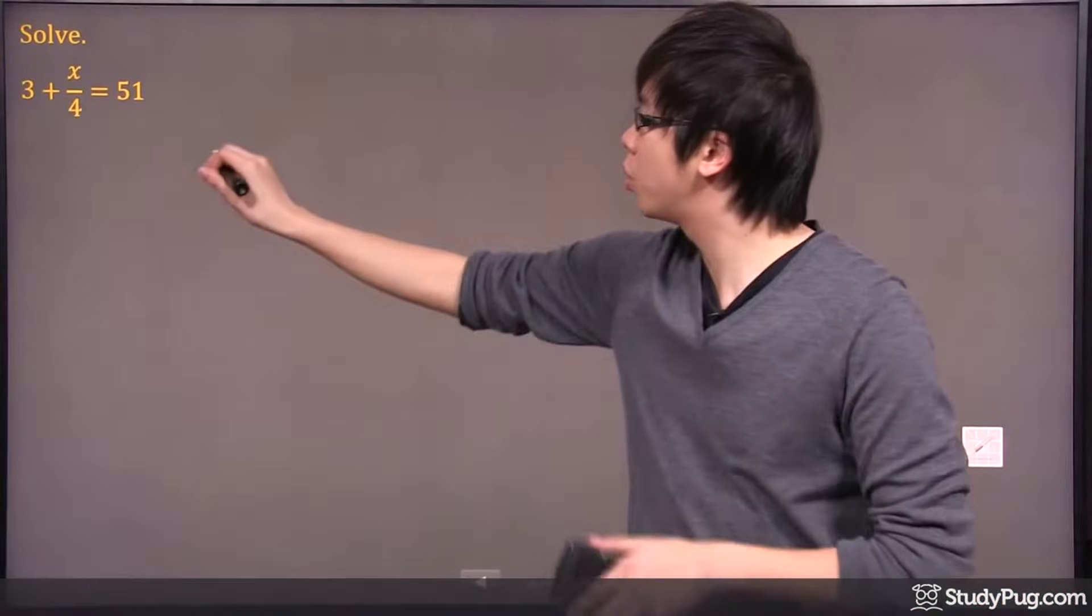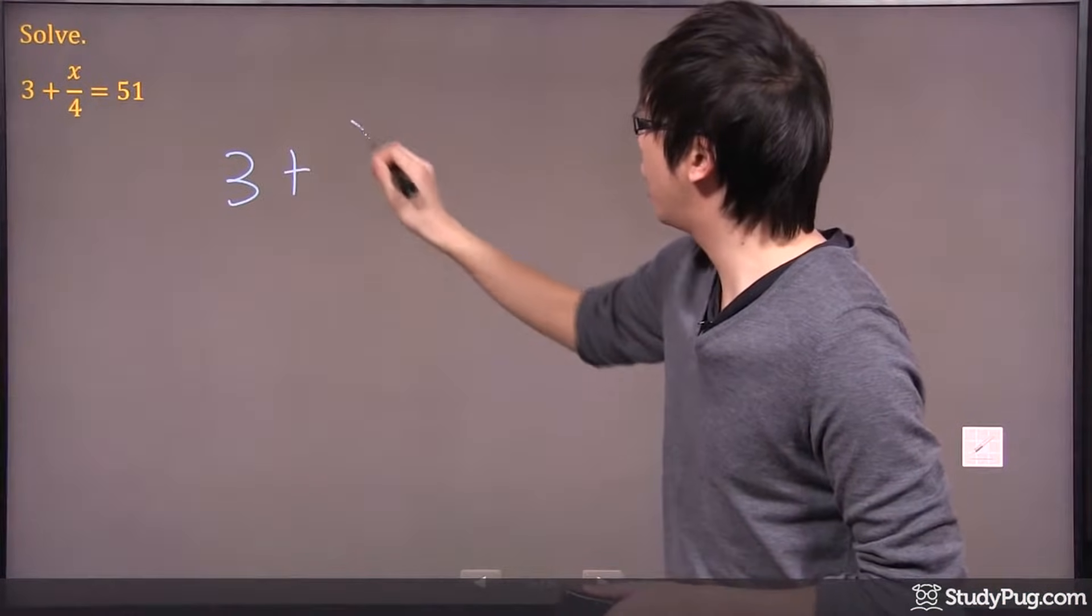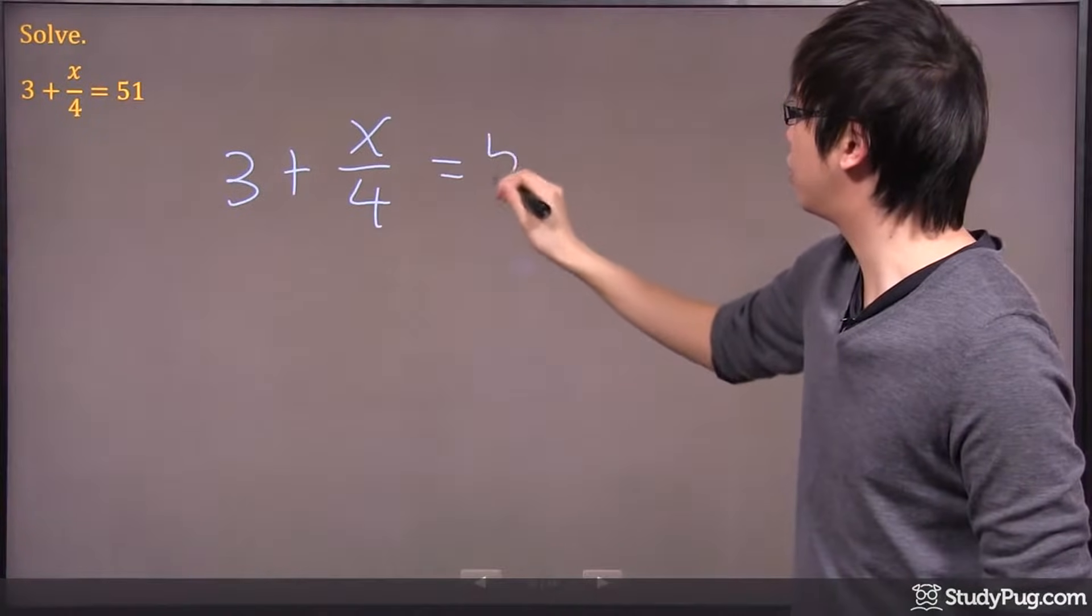So we got another question here. It says 3 plus x over 4, and that's equivalent to 51.